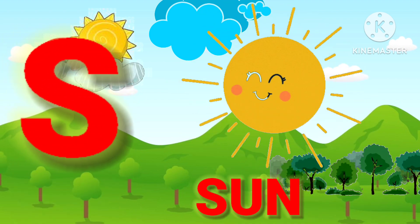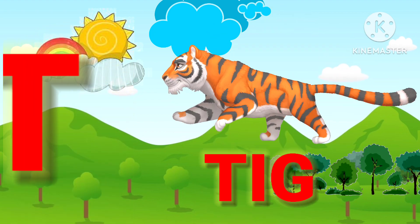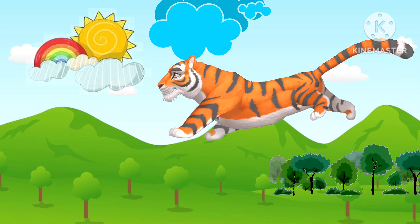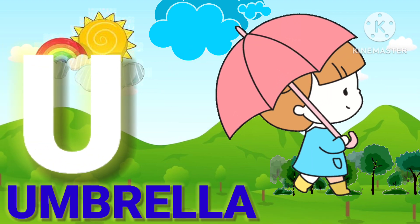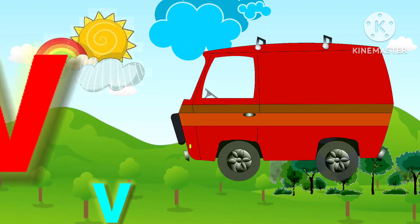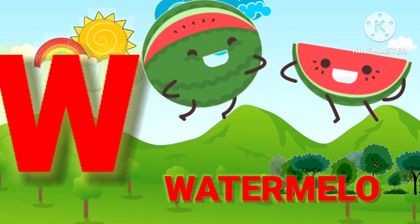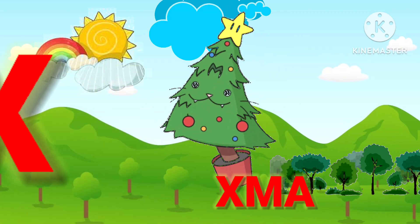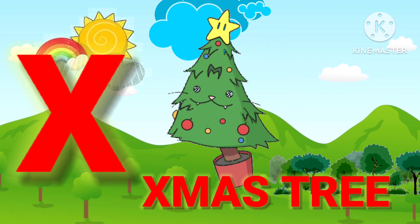S for Sun, T for Tiger, U for Umbrella, V for Van, W for Watermelon, X for Xmas Tree.